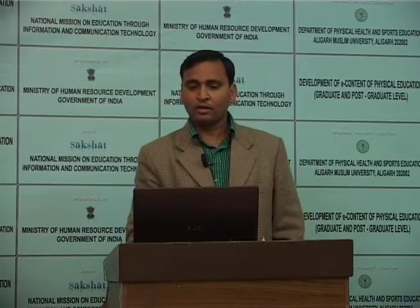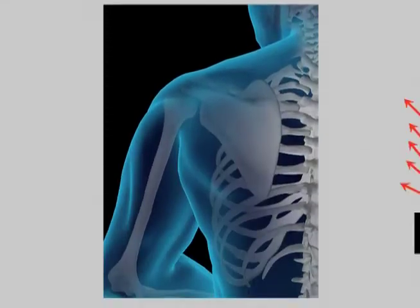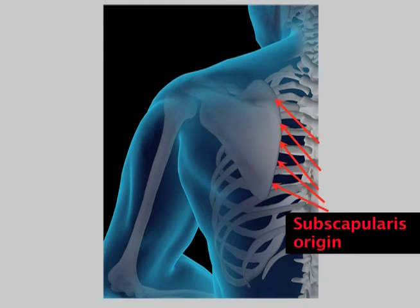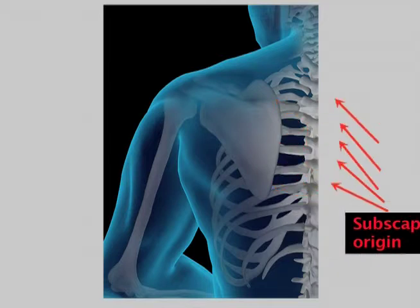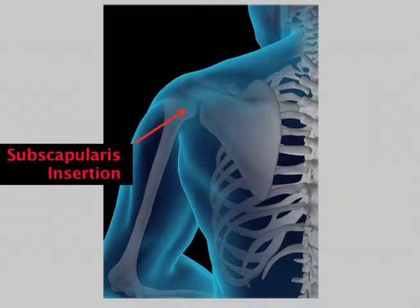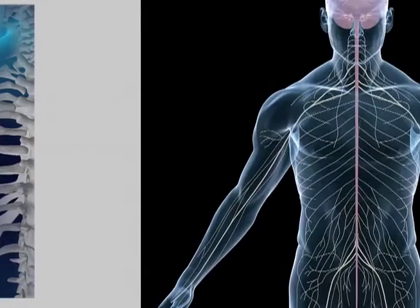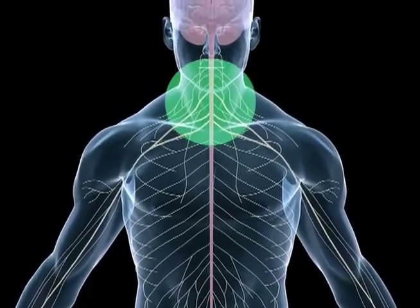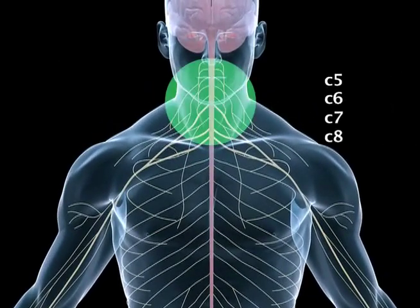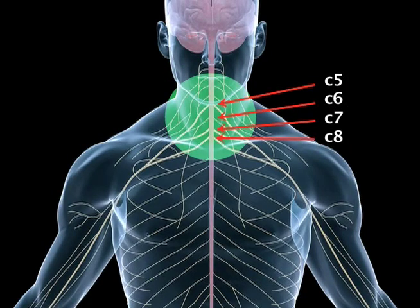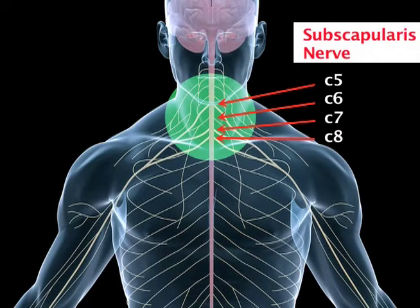Now, coming to the innervation. The whole muscle originates from the subscapular fossa and inserts over the lesser tubercle of the humerus. The innervation is provided by branches of the subscapular nerve, which has a root value from C5 to C8. This means the subscapularis is supplied by the subscapular nerve, originating from roots C5 to C8 from the brachial plexus.